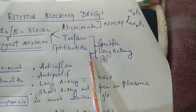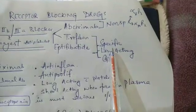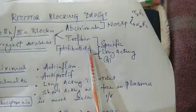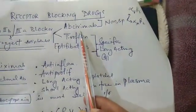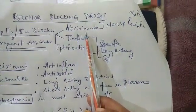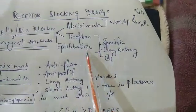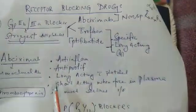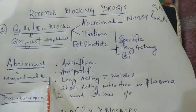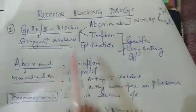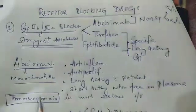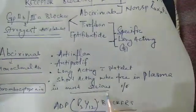Tirofiban and eptifibatide are specific blockers of these receptors. These are long-acting when present in the plasma freely, whereas abciximab is short-acting when freely present in the plasma, but when it is combined with the platelet, it acts as long-acting. Tirofiban and eptifibatide are excreted through kidney. Abciximab is a monoclonal antibody. Bleeding is the side effect of all antiplatelet drugs, but thrombocytopenia in this case is the most serious side effect of glycoprotein IIb/IIIa receptor blockers.